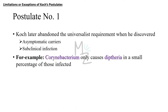For example, Corynebacterium — if you want to know more about that I do have a video on it — only causes diphtheria in a small percentage of those infected. If we take a sample from a population, 50% of individuals may show Corynebacterium in their blood. Of those, only a few are showing diphtheria and its signs and symptoms, while the rest are not.